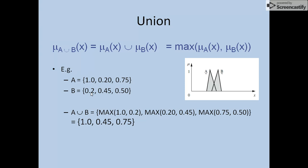We perform the same operation with all elements of both sets at their specific indexes. Next we compare 0.20 with 0.45, then 0.75 with 0.50, and every time we get the maximum value — that will be our result. In the pictorial representation, we have two sets A and B, and after performing the union operation we get the maximum of these two. This is the pictorial representation of the union operation.